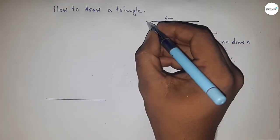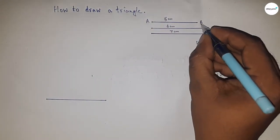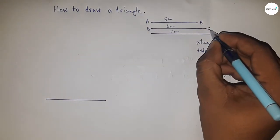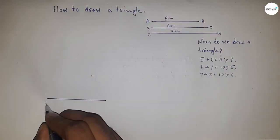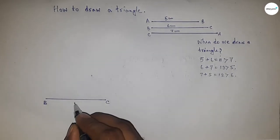This is point A, B, and C. This is line BC, and this is 6 centimeters.